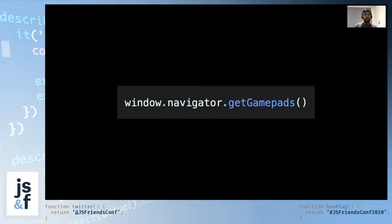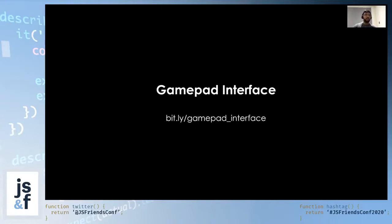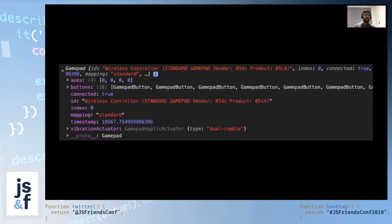There is a method available on the navigator interface which returns a list of gamepad objects, one for each connected gamepad to the browser. Every connected gamepad is an instance of the gamepad interface. This gamepad interface returns useful information about the connected gamepad — information related to the buttons, the axes, the current states, and other information like the device ID, status, etc.